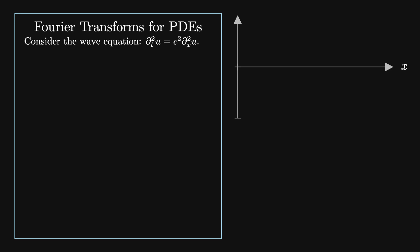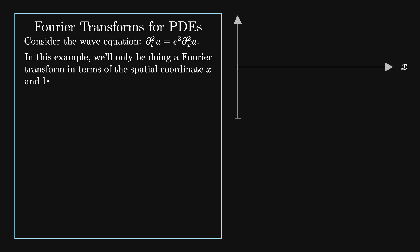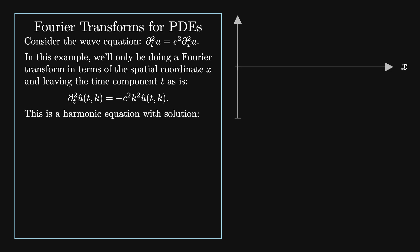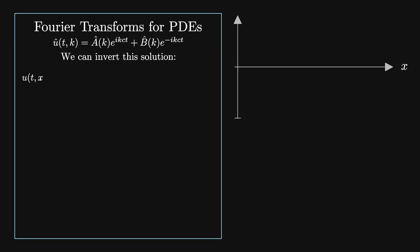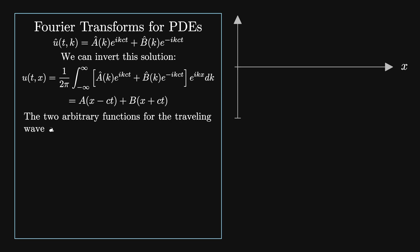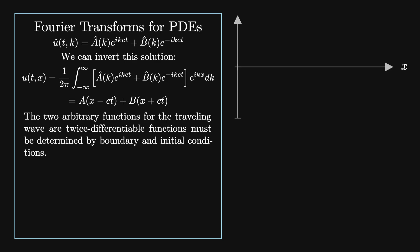Consider the wave equation: d_t squared u equals c squared d_x squared u. We'll only do a Fourier transform in the spatial coordinate x, leaving time t as is. This gives d_t squared u-hat of t and k equals minus c squared k squared u-hat of t and k. This is a harmonic equation with solution u-hat of t and k equals a-hat of k e to the i k c t plus b-hat of k e to the minus i k c t, where the constants of integration are actually functions of k. Inverting this solution gives u of t and x equals a of x minus ct plus b of x plus ct. The two arbitrary functions are twice-differentiable functions determined by the boundary and initial conditions.